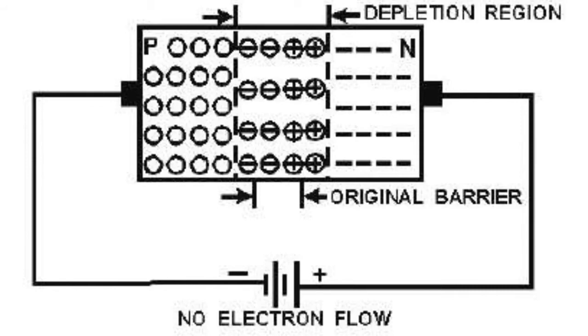When it is negative half cycle, the current cannot flow through diode. So that, half wave rectifier graph is shown.